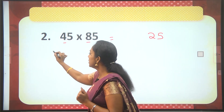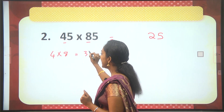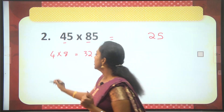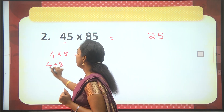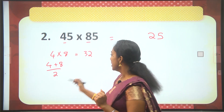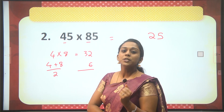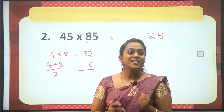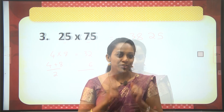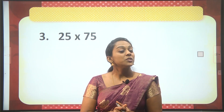We know our product ends in 25. Take the product of 4 and 8: 4 into 8 is 32. Next, take the average of 4 and 8: (4+8)/2 = 12/2 = 6. Add the average to the product: 32 + 6 = 38. So the answer is 3825.